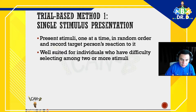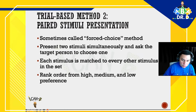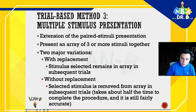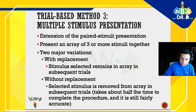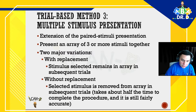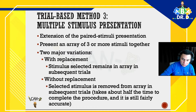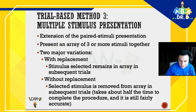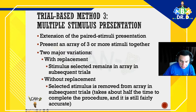We'll have other videos on the single stimulus and the paired stimuli presentation — when you present two items. The one we're focusing on is the multiple stimulus, which is basically an extension of the paired stimuli presentation. Here you present an array of three or more stimuli together. There are two major variations: with replacement, where the selected stimulus remains in the array for subsequent trials; and without replacement, where the selected stimulus is removed, which takes about half the time and is still fairly accurate. Many people prefer without replacement.